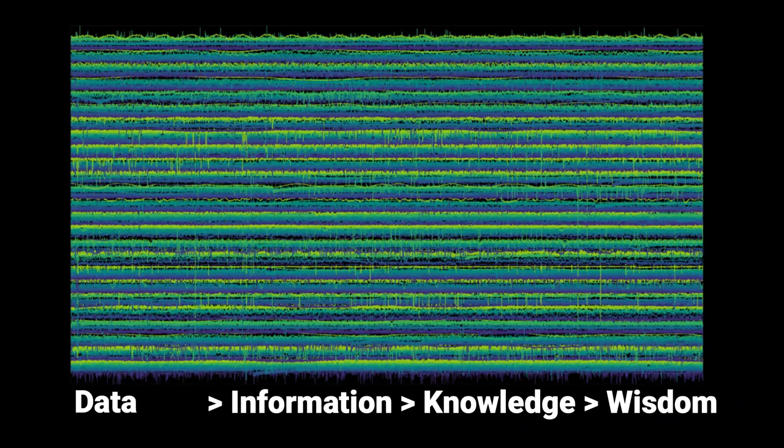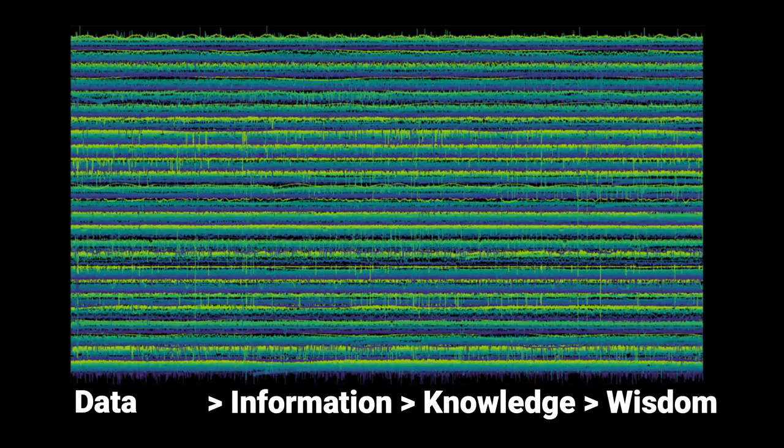And recently there was this big hype about artificial intelligence, machine learning. And maybe some of you have seen this kind of Venn diagram before. So there's artificial intelligence and a subgroup of that is machine learning. Then there's these two big groups like classic algorithms, neural networks, and deep learning. And most of this hype is really about this box of deep learning.